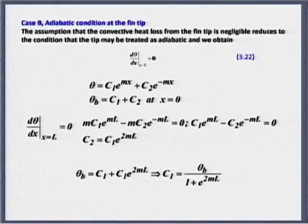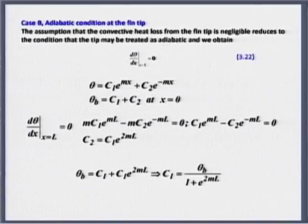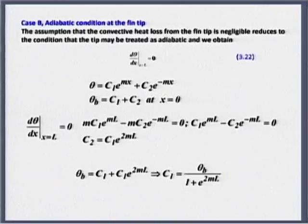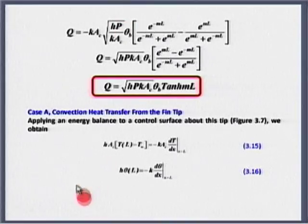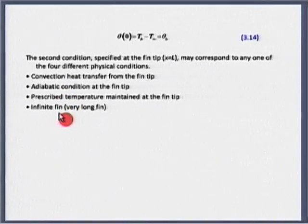To recap: we took the adiabatic boundary condition at the fin tip, with dθ/dx = 0 at x = L and base temperature θ_b. We solved the equation, found constants C₁ and C₂, and found the temperature distribution. Using that distribution, we found the heat transfer rate from the fin. 'Heat loss' is not the ideal term here — 'heat transfer rate' is appropriate since we want to maximize it. All other boundary conditions — prescribed temperature and infinite fin — can be worked out similarly.